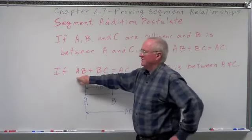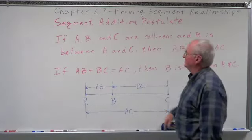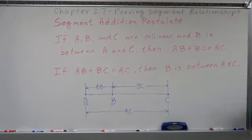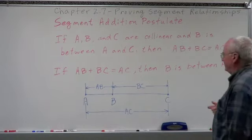And the converse of that, if the measurement of AB plus BC equals AC, then B is between A and C. It's also the definition of betweenness. And here's a picture of it.